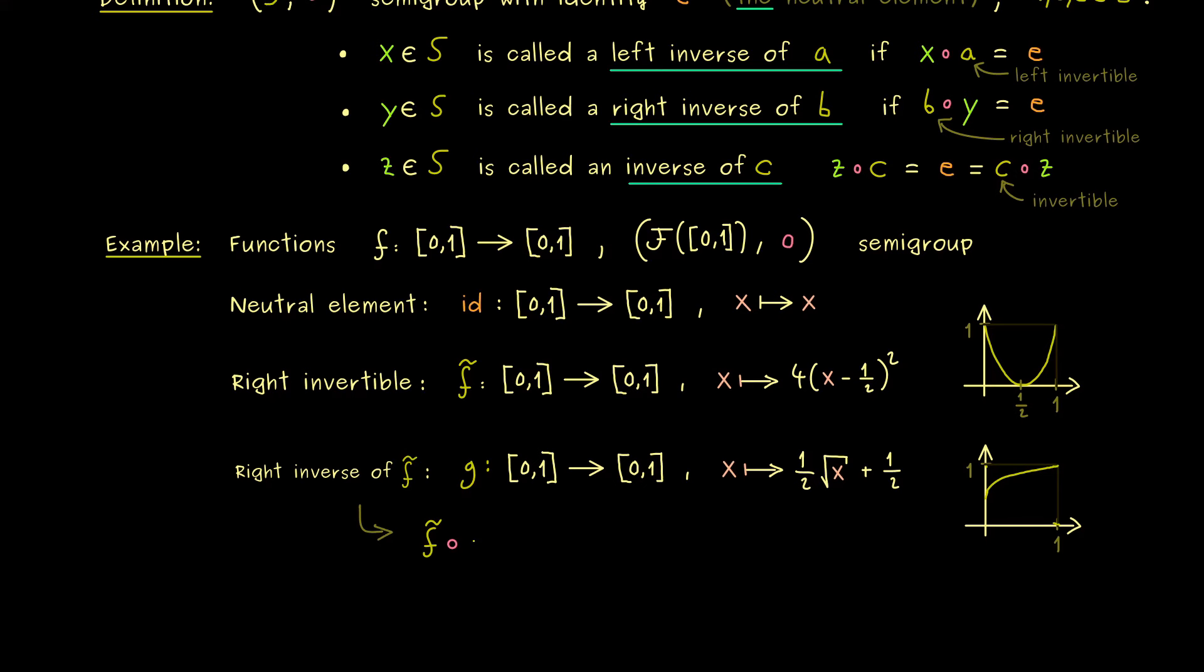We definitely wanted that f tilde after g is equal to the identity map. Moreover now we can also check that the other way around it does not work. So g is not a left inverse it's just a right inverse.